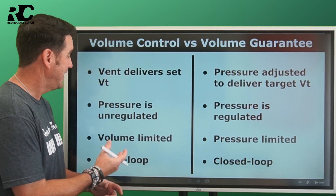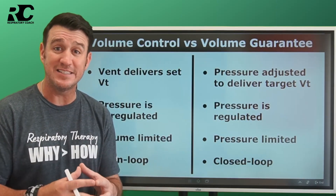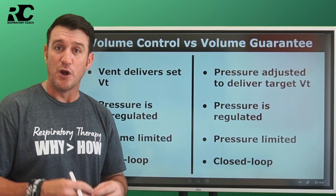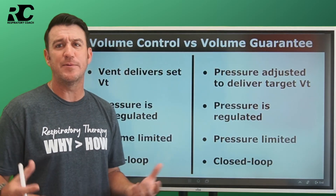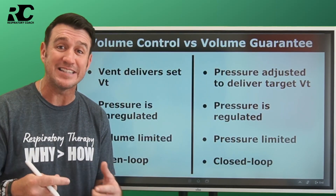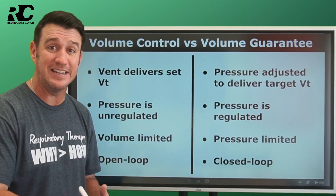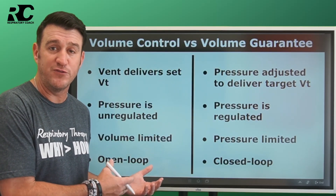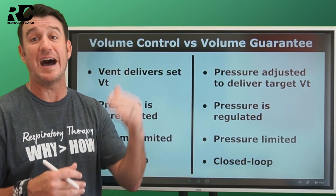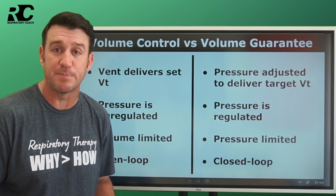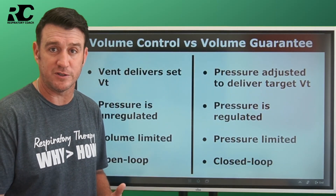Volume control is not pressure regulated — pressure is unregulated. That means when the ventilator delivers the set tidal volume, pressure can go as high as it's going to go based off of compliance and resistance. We do have a high pressure alarm that will notify us if that alarm is reached, but that is not innately built into the mode. If you set that alarm as high as it could go, the pressures could go as high as they'll go. Nothing would stop the volume from being delivered based on pressure. That's the way volume control works.